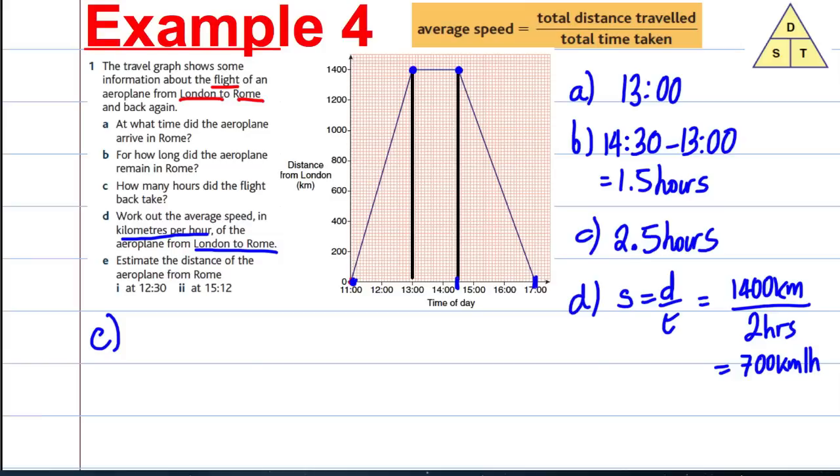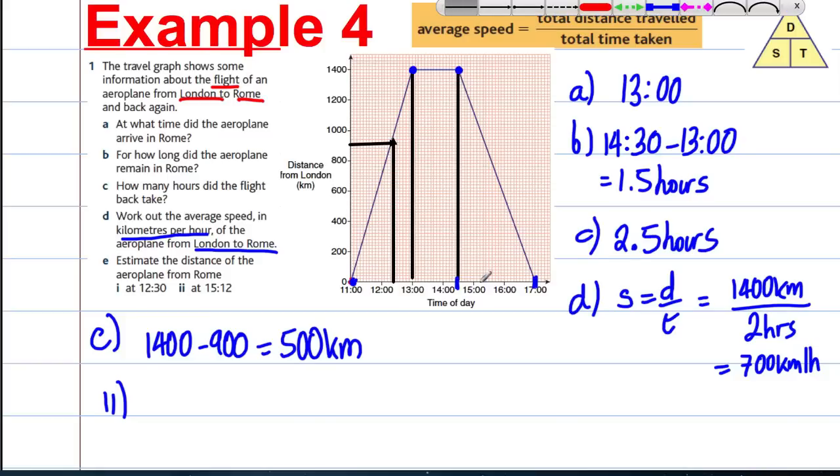And lastly, part E: estimate the distance of the airplane from Rome at 12:30. At 12:30 we're about here on the graph. Currently it looks to me we're about in the region of 900 kilometers from London.